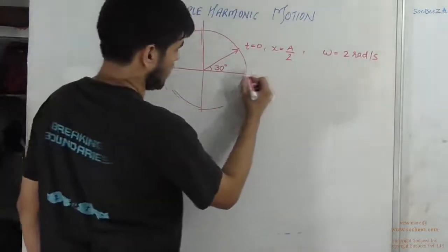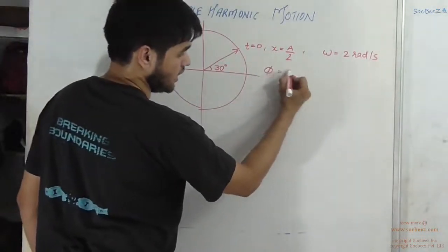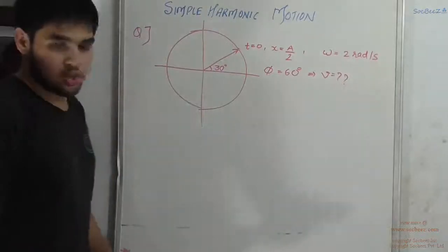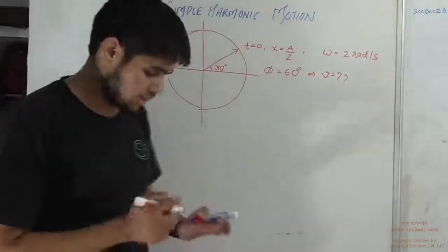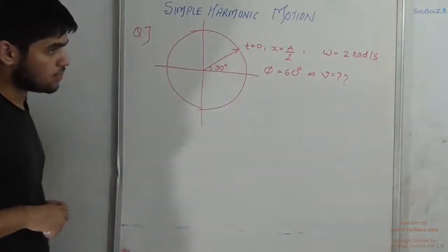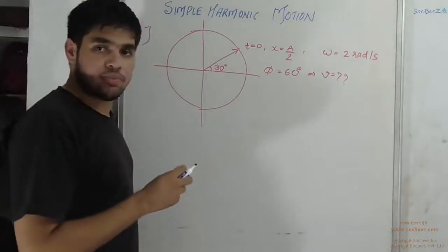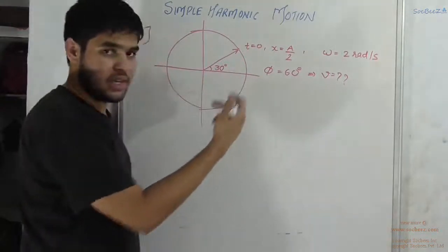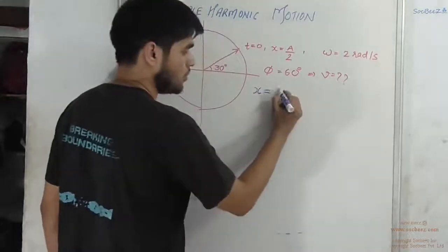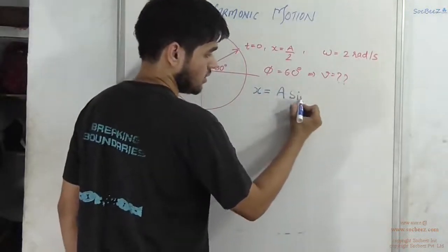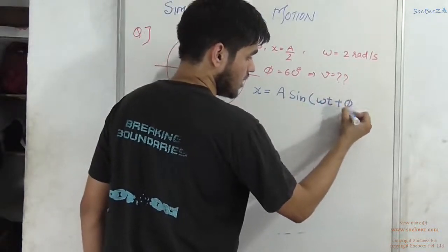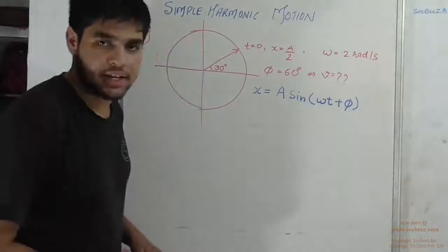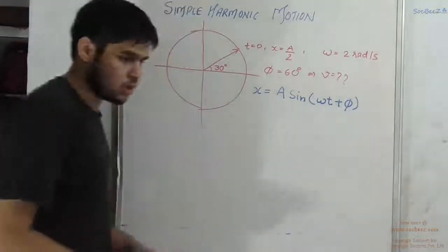You have to find the velocity when the phase angle phi equals 60 degrees. We apply the basic concepts of phasor. You can assume the displacement function in the form x = a sin(omega t + phi). As studied earlier, it can also be cosine form, but I am assuming the sine form here.